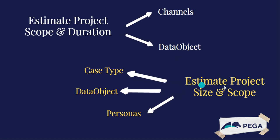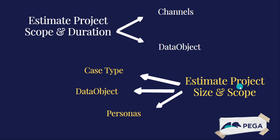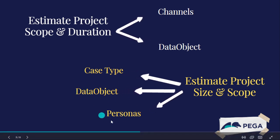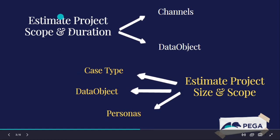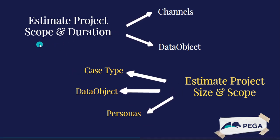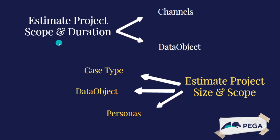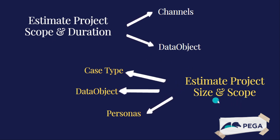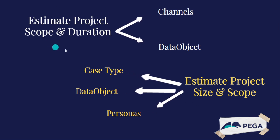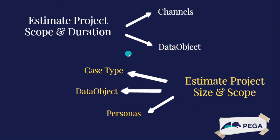To estimate the project size and scope, based on the size and scope we can estimate through the case type and data object persona. Note the difference: one is considered about scope and duration, the other about size and scope. Take this point and continue with your Pega studies. Thank you.